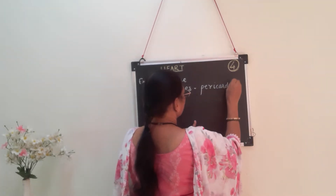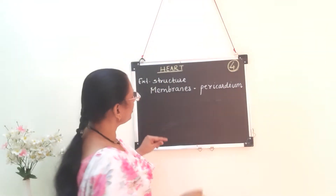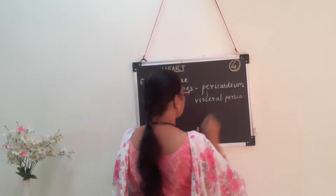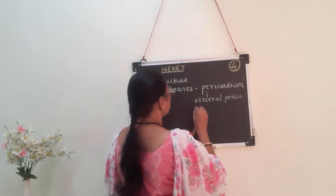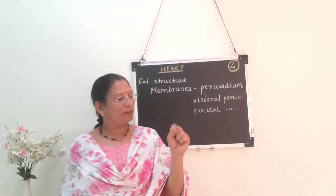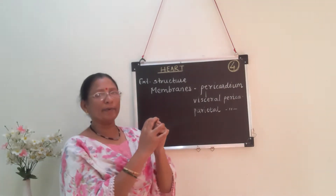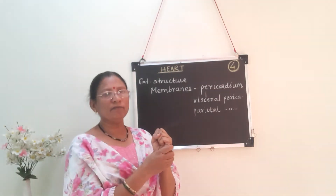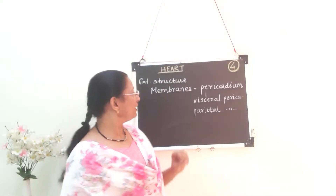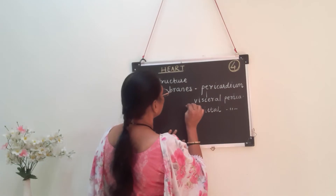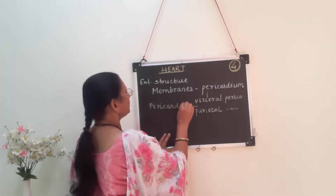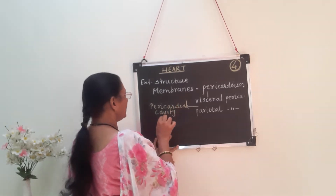The pericardium has two membranes. The first is the visceral pericardium, which is found attached to the wall of the heart. The second covering is called the parietal pericardium, found above the visceral pericardium. Between them, a cavity is present called the pericardial cavity, which is filled with a fluid called pericardial fluid.